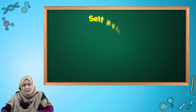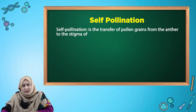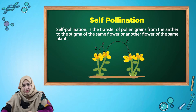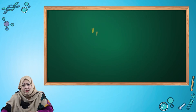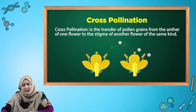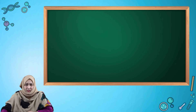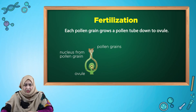Let's have a look at self-pollination. In self-pollination, the pollen grains are transferred from the anther to the stigma of the same flower, or the anther of a flower of the same plant. In cross-pollination, the transfer of pollen grains occurs from the anther of one flower to the stigma of another flower of the same kind.